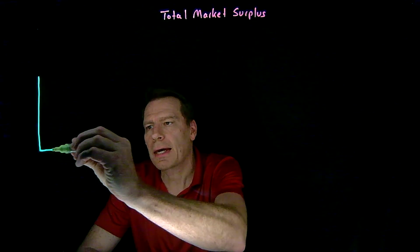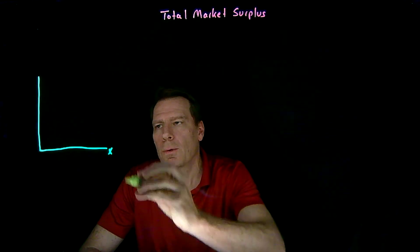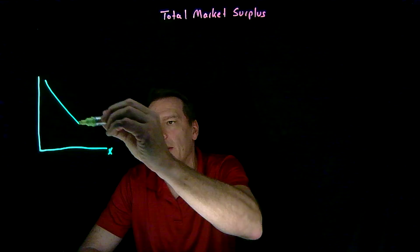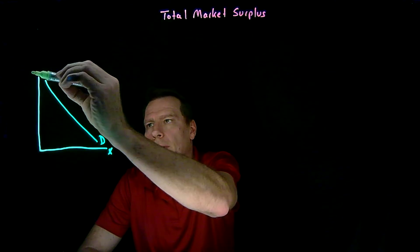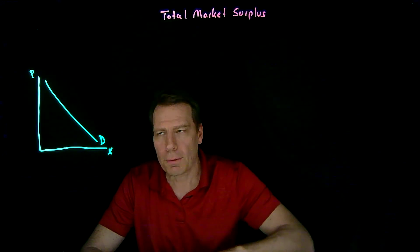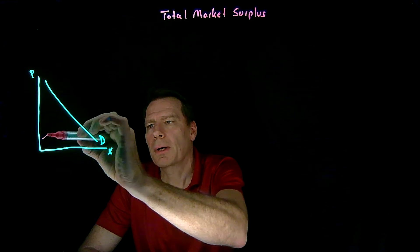In the market for the good x, we have a downward sloping market demand curve and an upward sloping market supply curve.